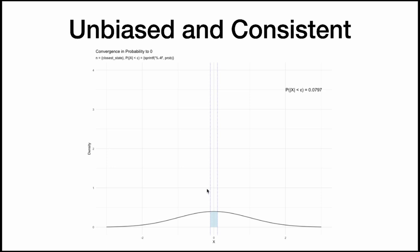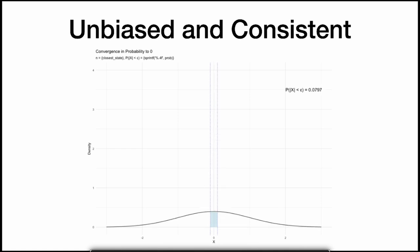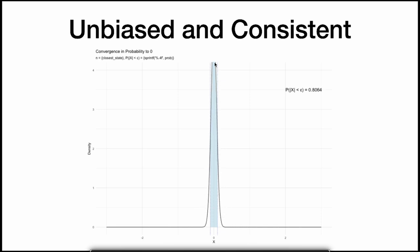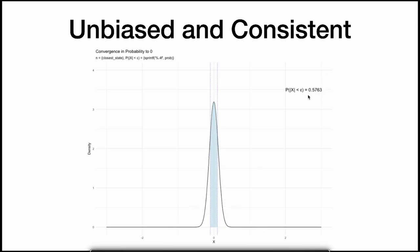Let's visualize this. Say we have an unbiased estimator of our parameter, which in this case is 0. We have an unbiased estimator centered around 0, and as the sample size gets bigger, we get a distribution that becomes more and more concentrated around that value. The probability of being very close to 0 gets closer and closer to 1.